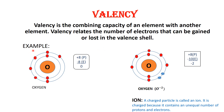Now let's understand valency with the help of an example. Here you can see the oxygen atom. The number of protons in an oxygen atom are eight, so the number of electrons will also be eight. Since the number of protons and electrons are equal, overall the oxygen atom has no charge. Now for an atom to be stable, the outermost shell should have eight electrons. But in the case of the oxygen atom, the outermost shell has only six electrons. This shows that the atom is reactive or unstable.